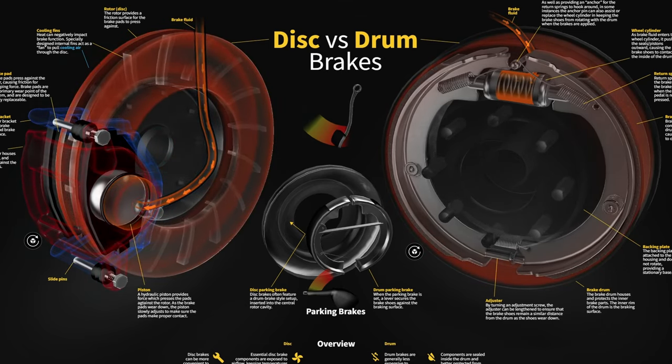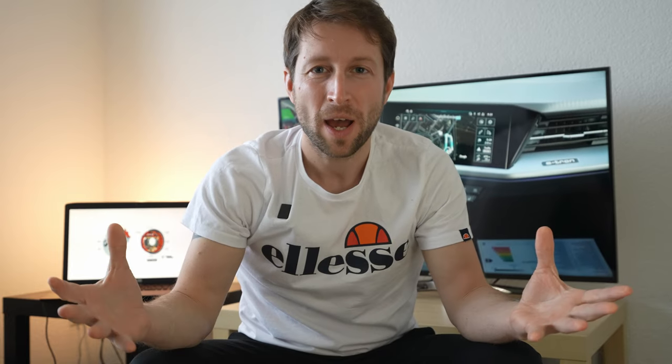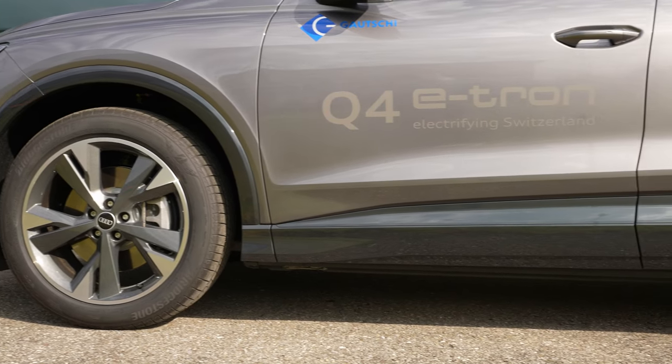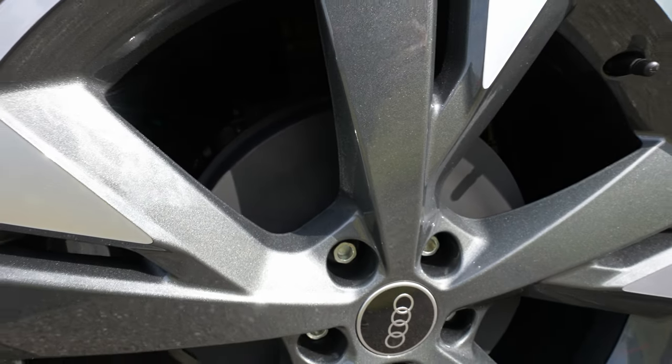Depending on the system configuration, the friction brake may be either disc brakes or drum brakes. Some vehicles use disc brakes while others use drum brakes, and there are also cars that use discs in the front and drum brakes on the rear. We see examples of this in recent years with Volkswagen Group cars like the ID.3, ID.4, and even the Audi Q4 e-tron, which use drum brakes in the rear.